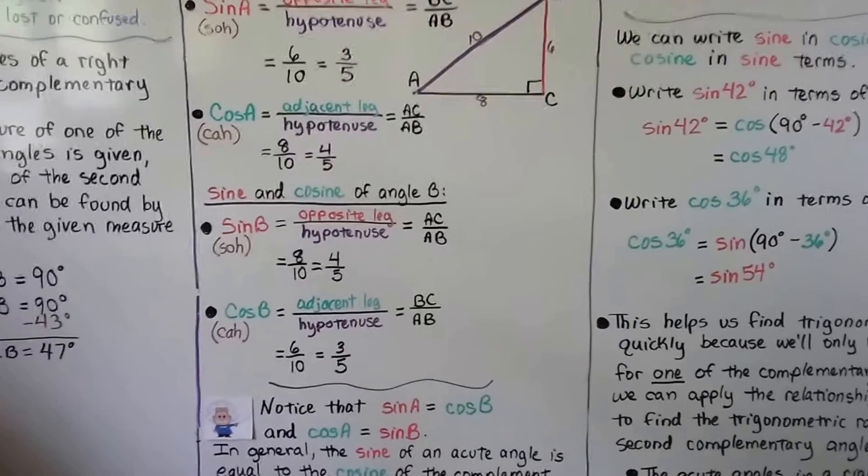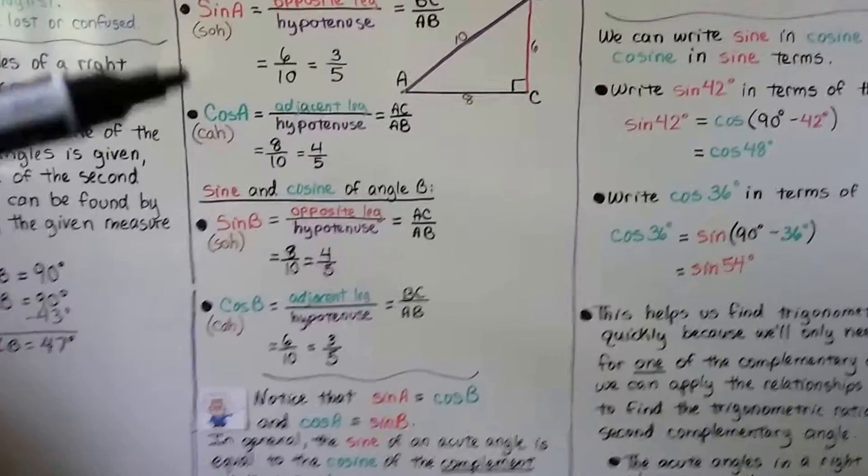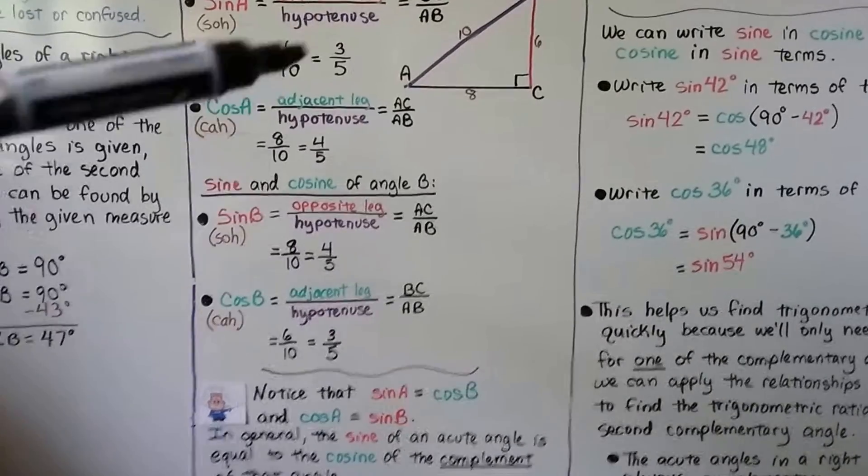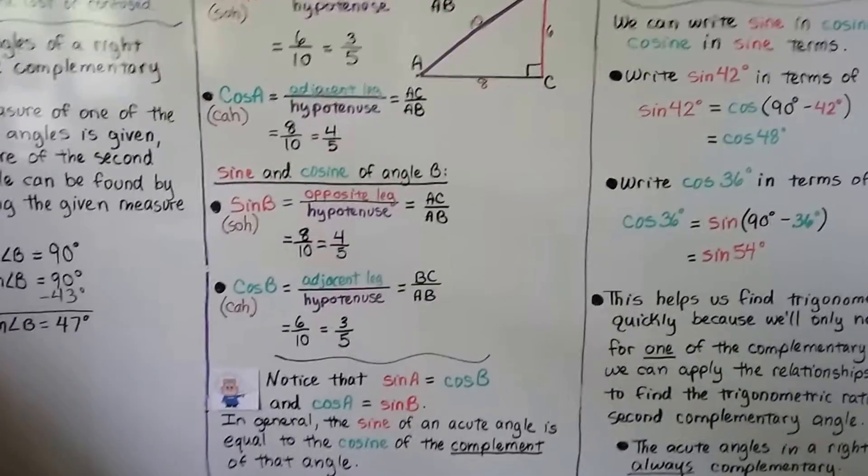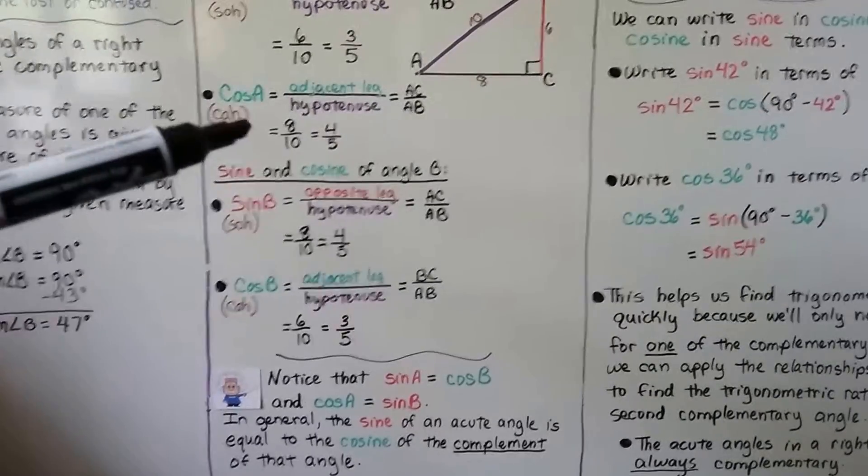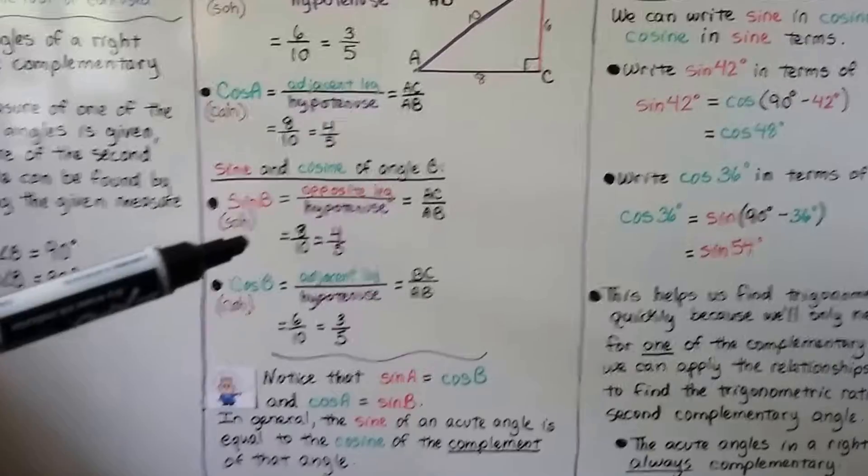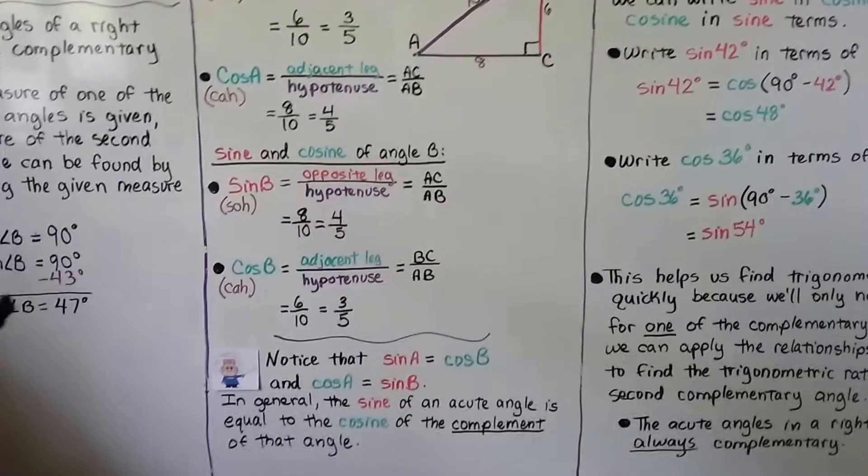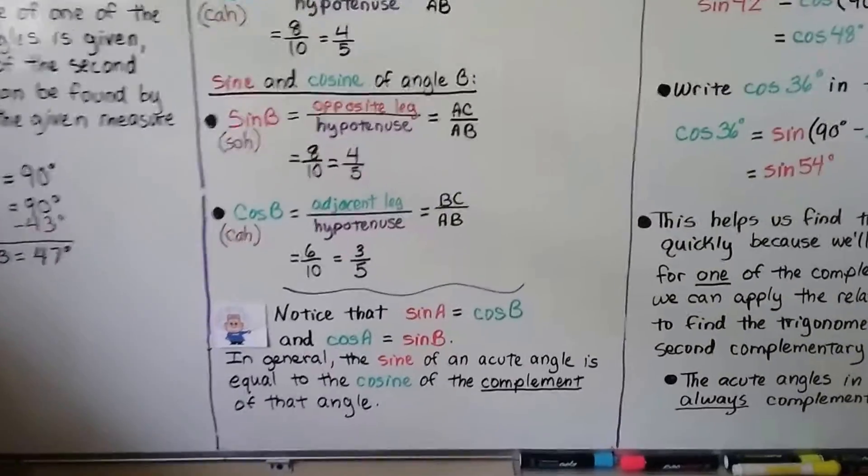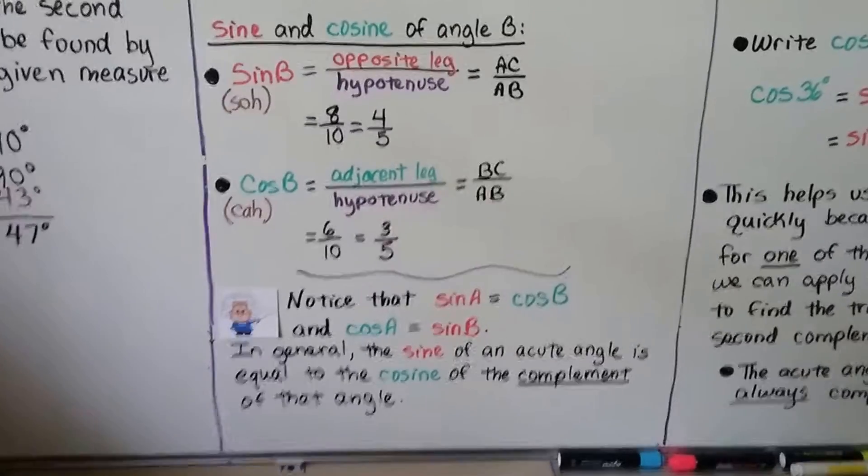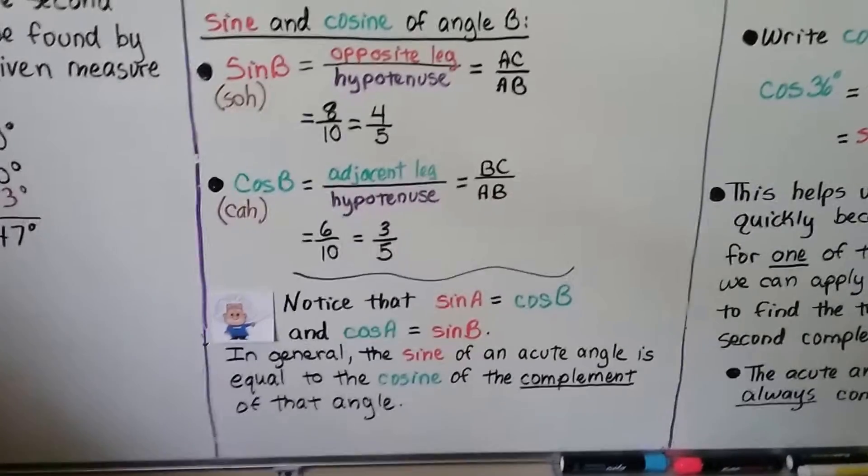So do you notice something? Did you notice that the sine of A equaled the cosine of B? That's 3 fifths, and that's 3 fifths. And the cosine of A is 4 fifths, and the sine of B is 4 fifths. So in general, the sine of an acute angle is equal to the cosine of the complement of that angle.